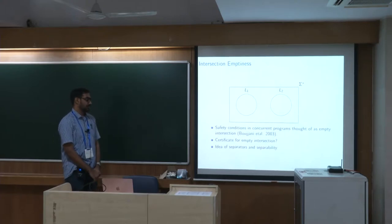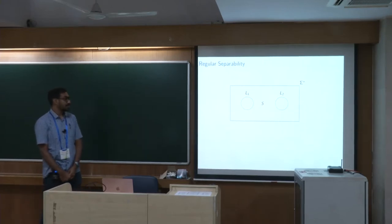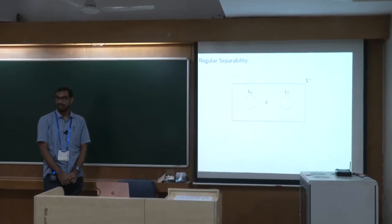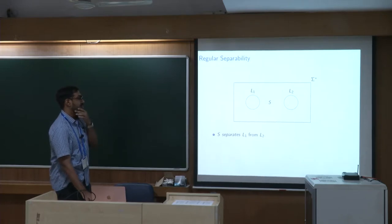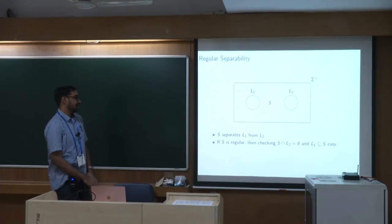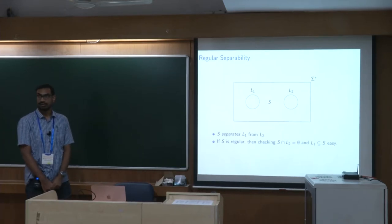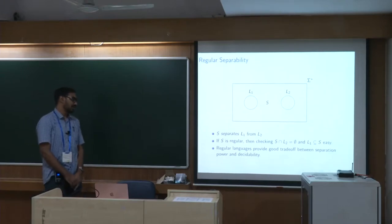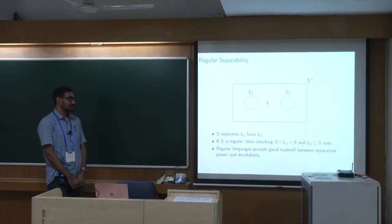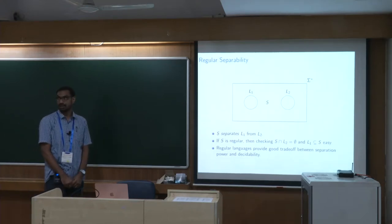What about a certificate showing that two languages don't intersect? This leads to the idea of separators and separability. In the related problem of regular separability, we ask for a separator S which is regular, contains all of L1, and is disjoint from L2. If S is regular, checking this is usually easy for many language classes, and regular languages provide a good trade-off between separation power and decidability.